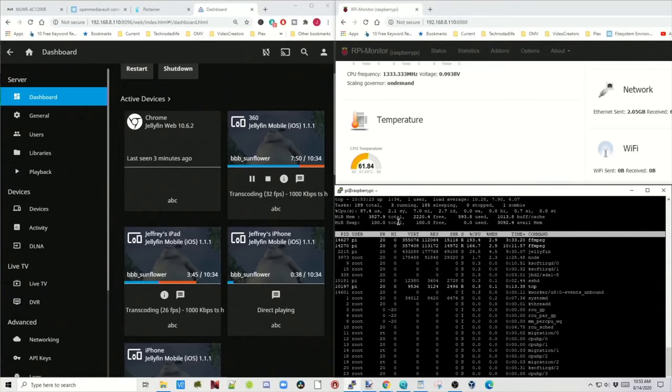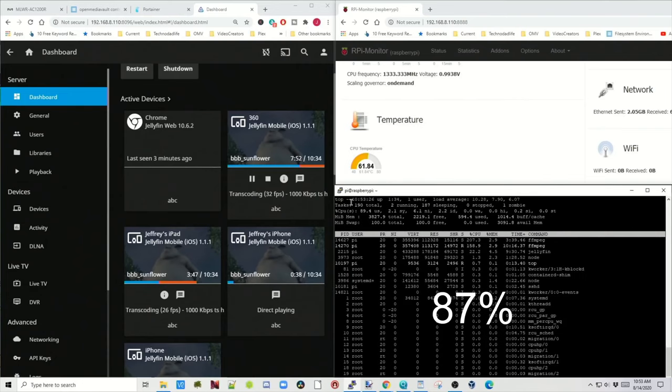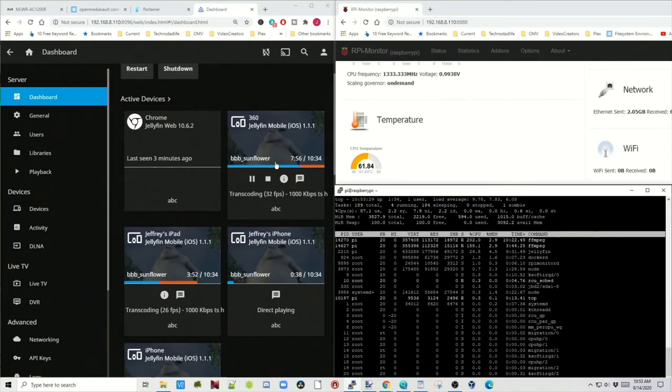So now we have two going. Our CPU is at 87%. Our temperature is at 61 degrees. And over here you can see we have two transcoding.